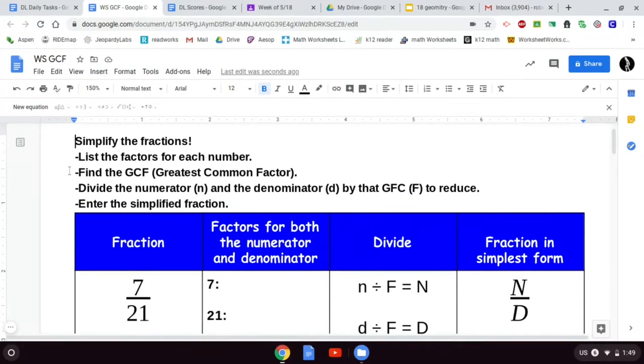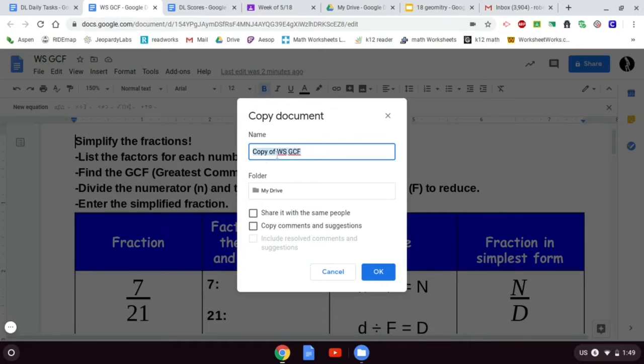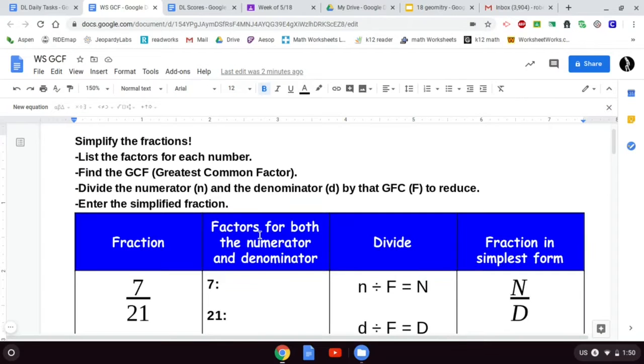Now I set this up for you as a document that you can make your own copy of. Go to file, make a copy. Title it not copy of WSGCF, you would just title it with whatever your number is. Like my number is zero, so I put zero WSGCF. I would then click on OK, save it, and then upload it to me once I've got it done.